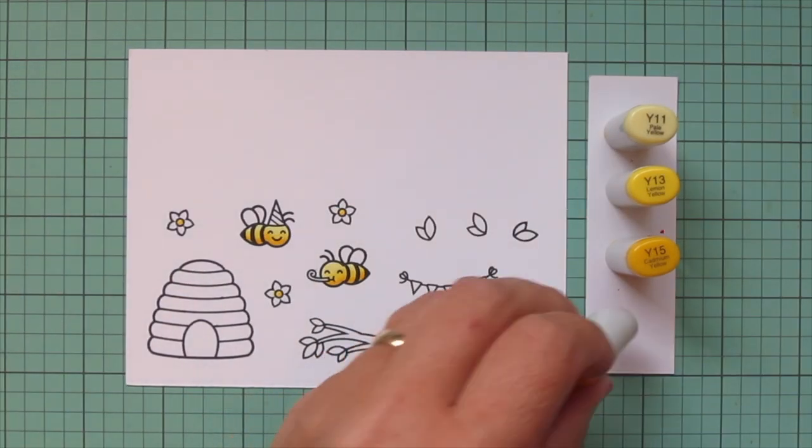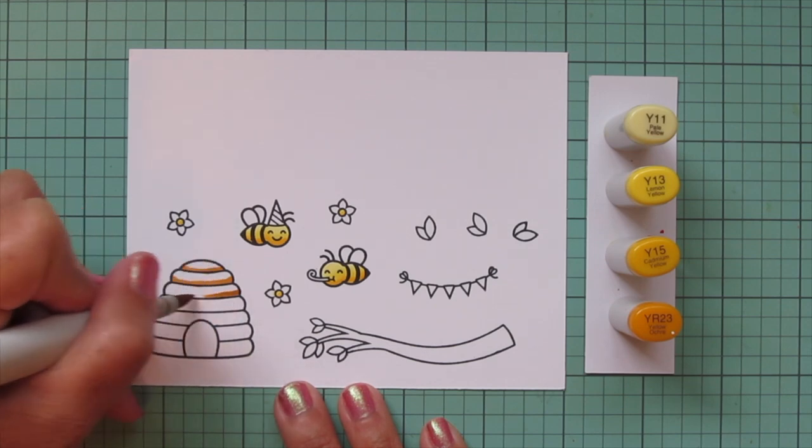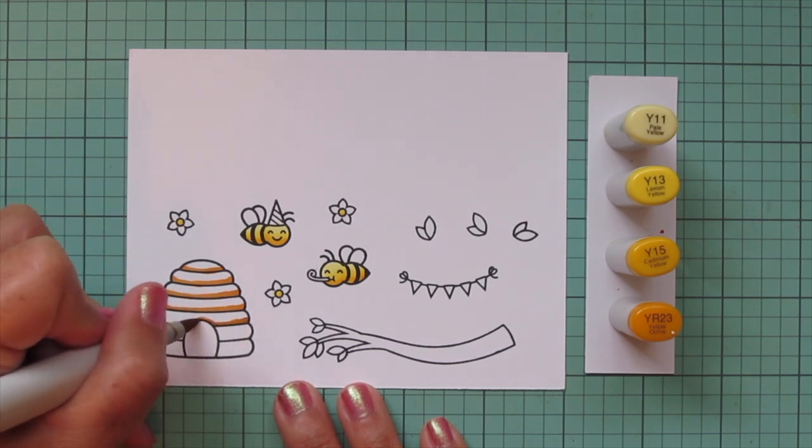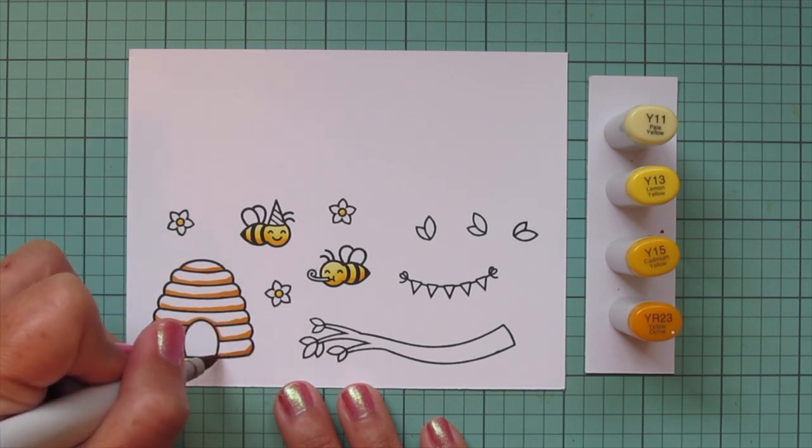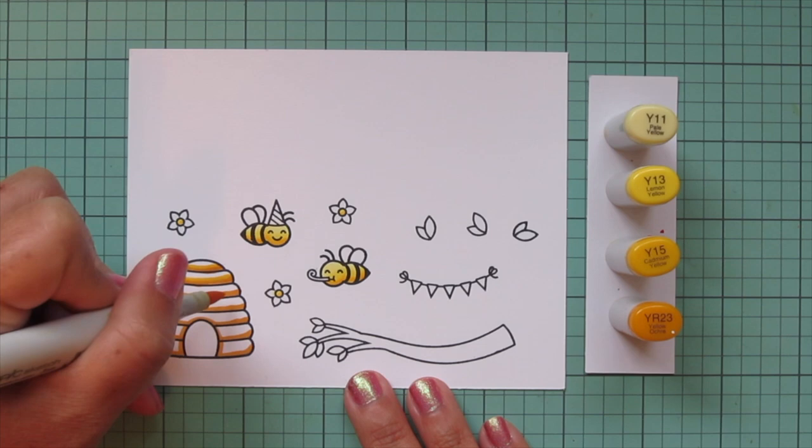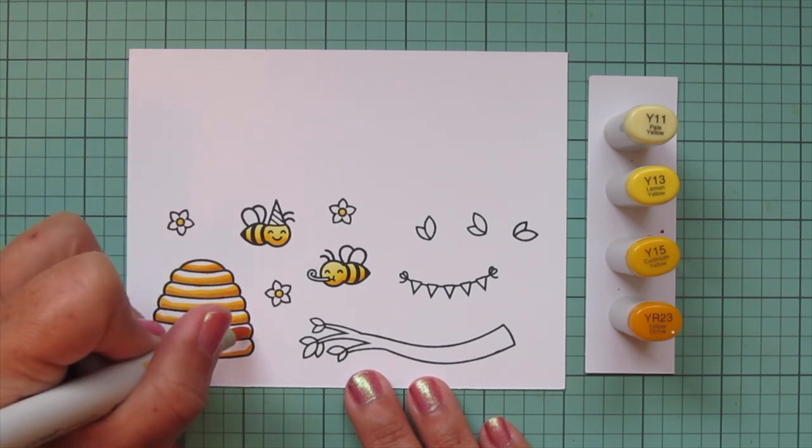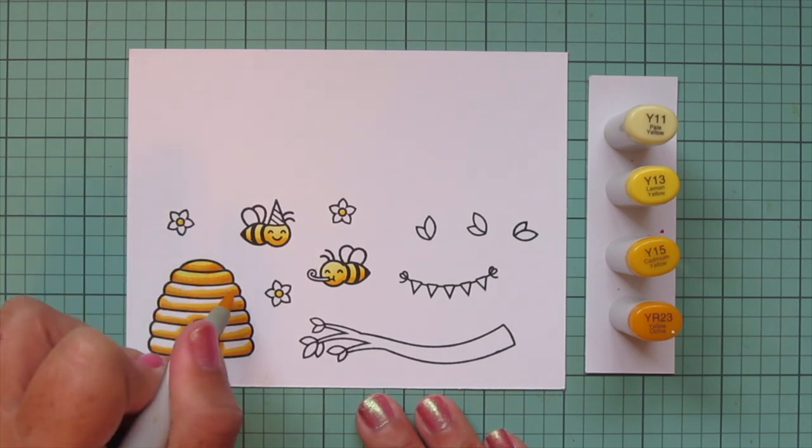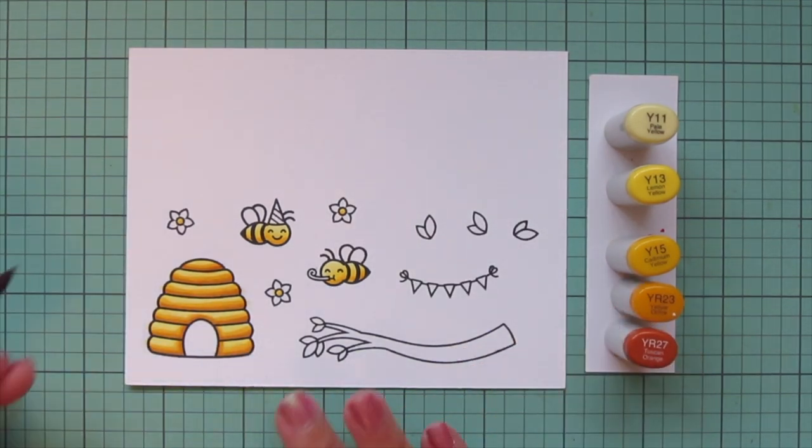I'm also going to do the centers of the flowers with just the darkest two shades, the Y15 and then a little Y13. For the beehive, I wanted to darken that up a bit, so I brought in YR23. I'm putting a little line there to separate each section drawn in on that beehive, and then adding a bit of shadow around the opening. Once I have that YR23 laid in, I'm going to blend that out with the Y15, just doing nice little strokes there, overlapping the previous shade a little bit so that it gets a nice smooth blend. Then once I have that Y15 laid in, I'm going to fill in the rest with the Y13. So I didn't use the Y11 on this at all.